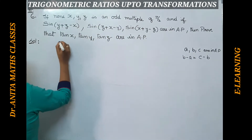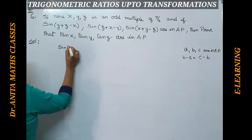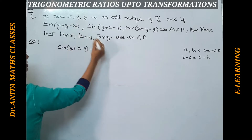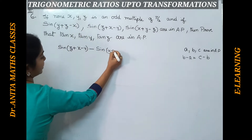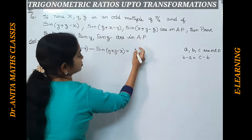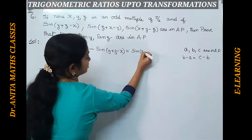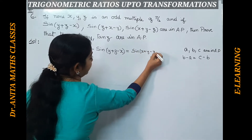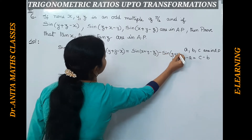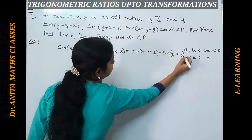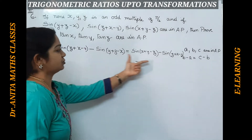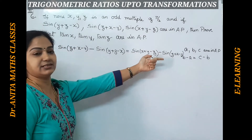So we write: sine of (z+x−y) minus sine of (y+z−x) equals sine of (x+y−z) minus sine of (z+x−y). That is, the definition of AP applied to our given terms. So we are working with sine C minus sine D on both sides.